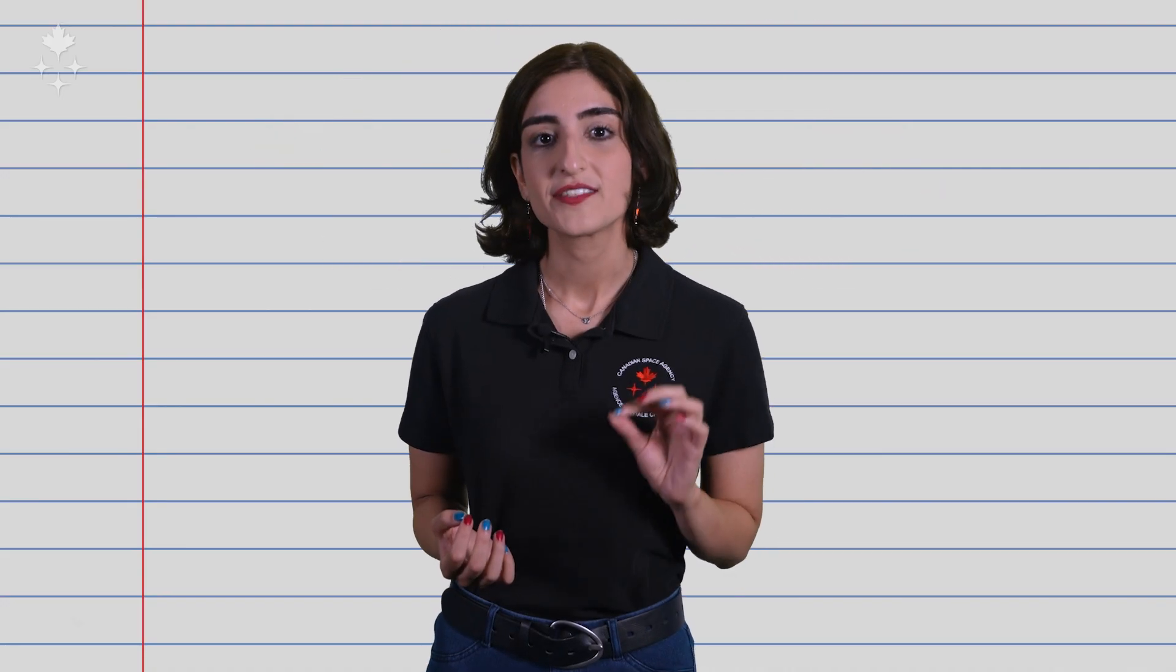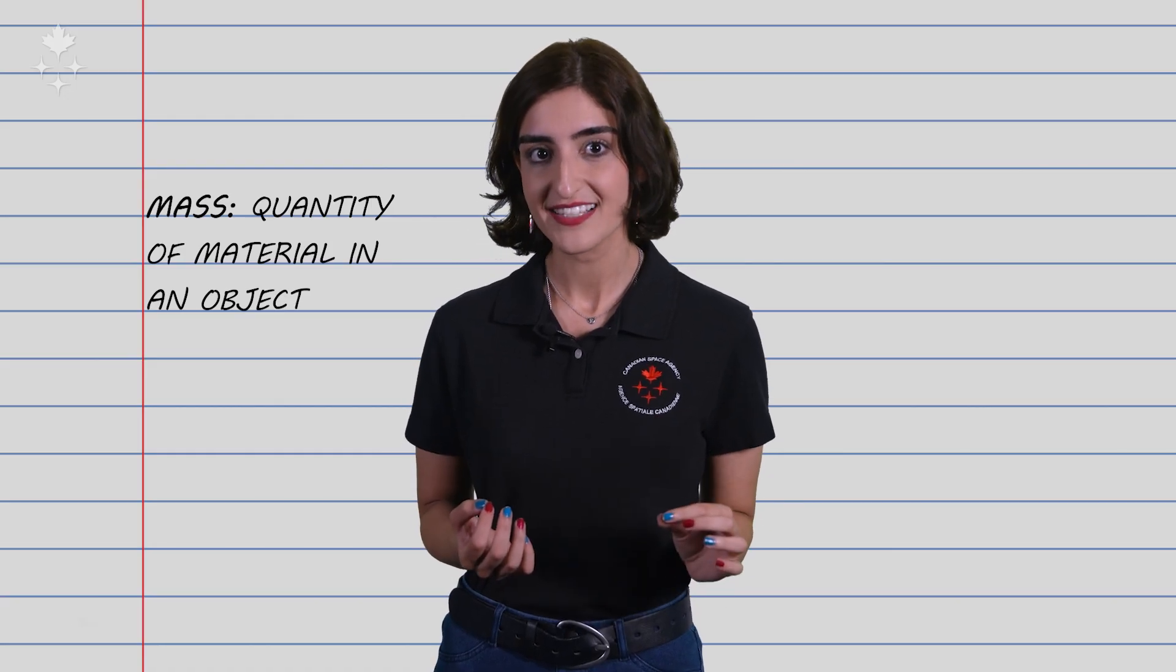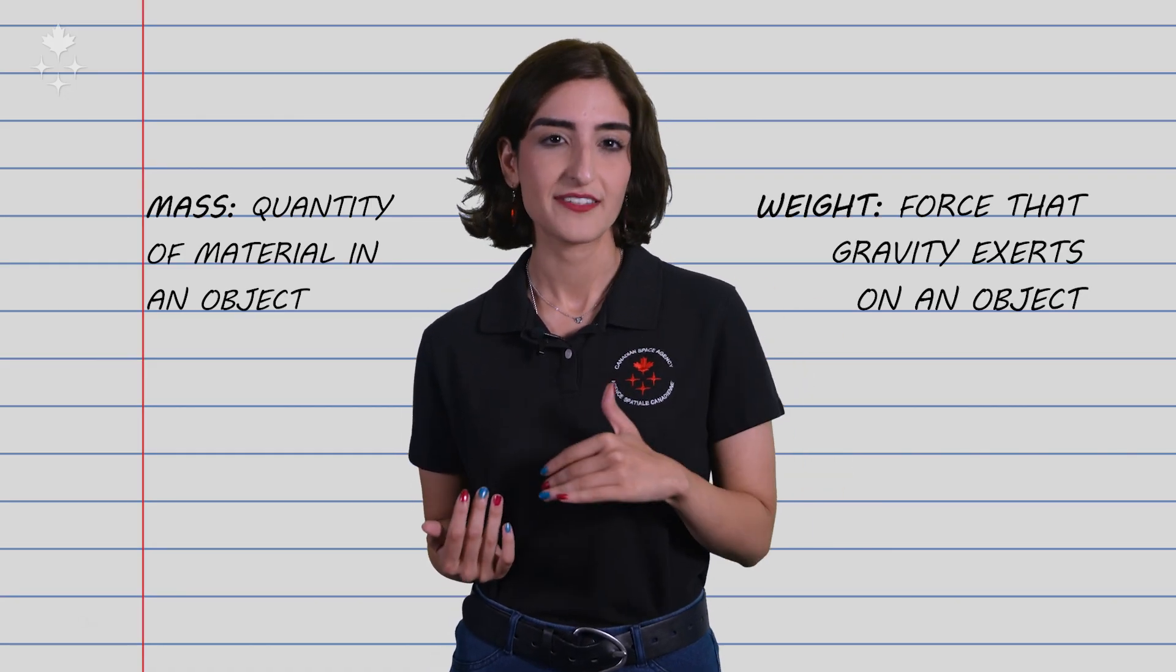Simply put, mass corresponds to the quantity of material in an object, whereas weight is the force that gravity exerts on that object.